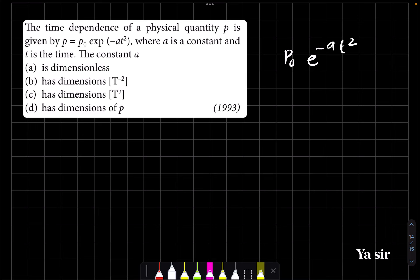Okay, a is a constant, t is time. What is the dimensional formula of a? That is the question.